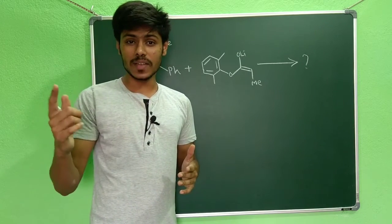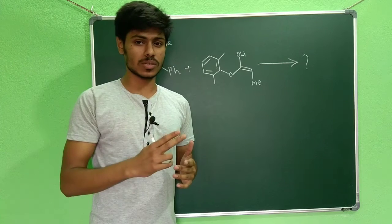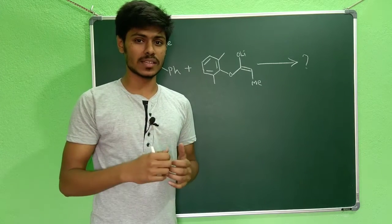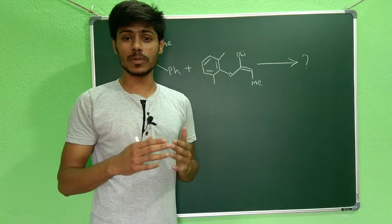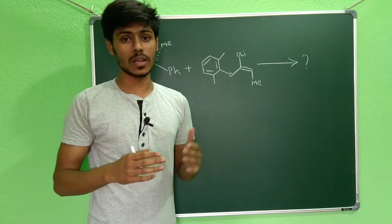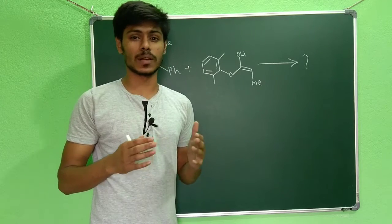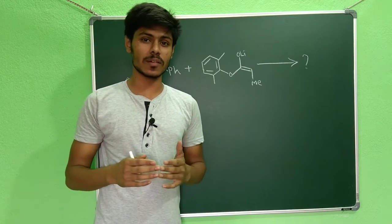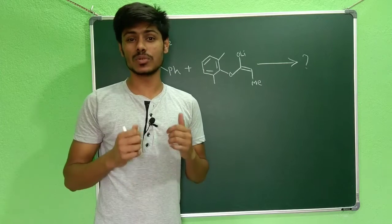After the reaction, two stereocenters or two chiral centers will be generated. We also have to use the Zimmermann-Traxler model to explain the stereochemical outcome of this particular reaction. You are watching Chemistry Lover, and let's start today's topic.